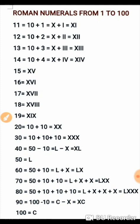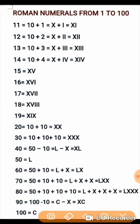Using these rules, we can form Roman numerals from 1 to 100. 11 is 10 plus 1, written as XI. 12 is 10 plus 2, written as XII. 13 is 10 plus 3, written as XIII. 14 is 10 plus 4 — 10 is X and 4 is IV — so it is written as XIV.